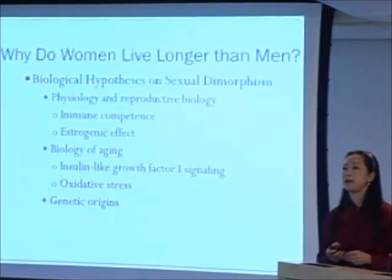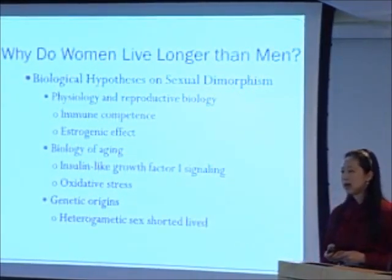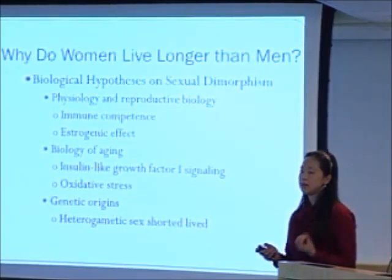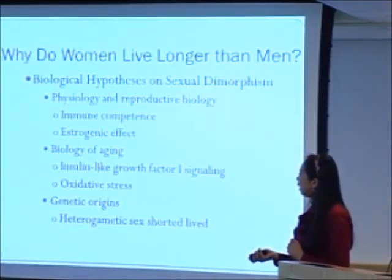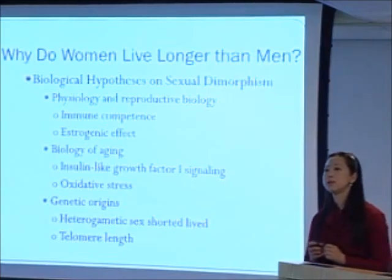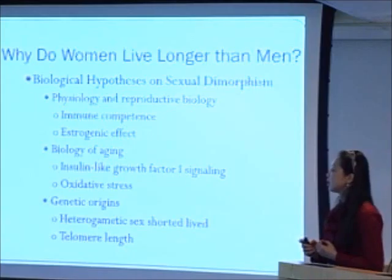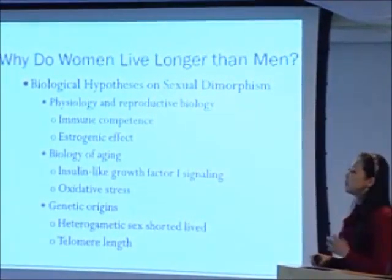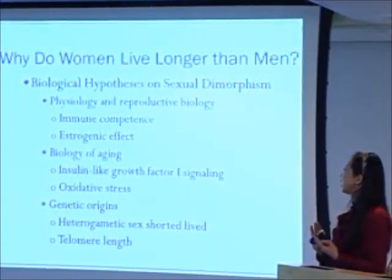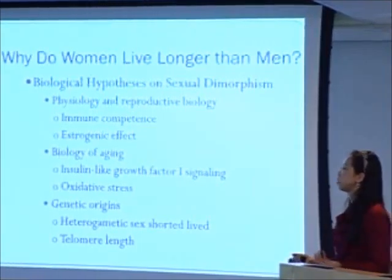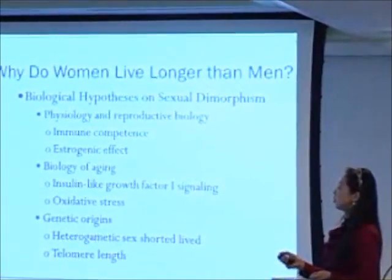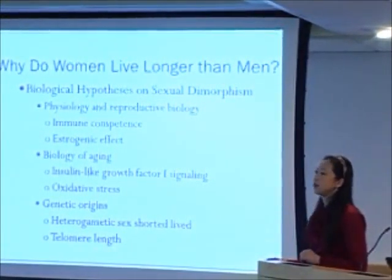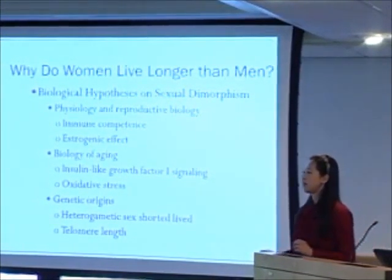Genetic constitutional differences might also favor females. The heterogametic sex — in mammals that would be the XY male, which has two different sex chromosomes — tends to be shorter-lived, whereas having two X chromosomes may be advantageous. Telomere length is genetically determined and is longer in women than men, and longer telomeres mean slower cell aging. However, these hypotheses have not been consistently supported. In some animals like mice, golden hamsters, and guinea pigs, males live substantially longer than females, which contradicts the heterogametic sex hypothesis and the estrogenic one. A recent critical review of all evidence on the link between telomere length and aging shows no consistent support for this link.